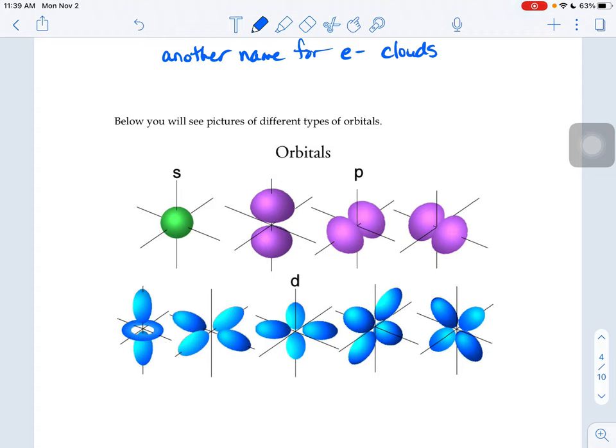So this first one, an S-shaped cloud, looks like a sphere. And no matter how you look at a sphere, it kind of looks the same on all sides. So that's why for that S-shaped cloud, there's only one of them.